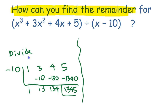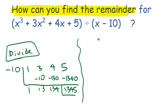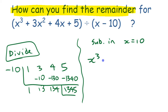Now we're going to do something else. Instead of doing this division, we are going to substitute in the root of that divisor — the x value that would make this binomial equal to zero. So we're going to substitute in x equals 10.